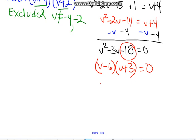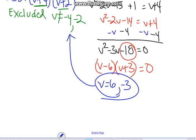At this point, we take a look and see, what can I plug in for v to make this equation true? V can equal a positive 6 or a negative 3. That is not either one of my excluded values, so there I have my solutions. 6 and negative 3.